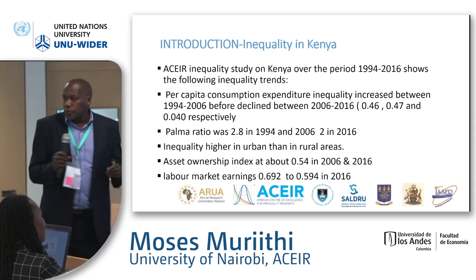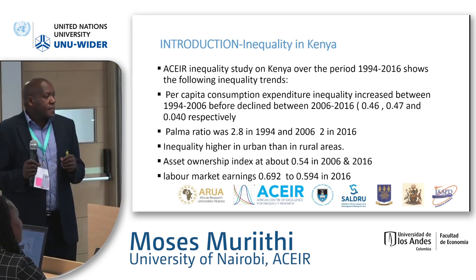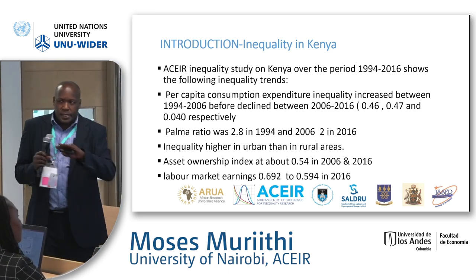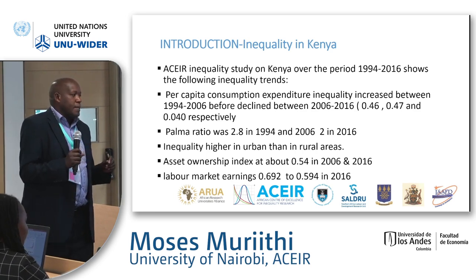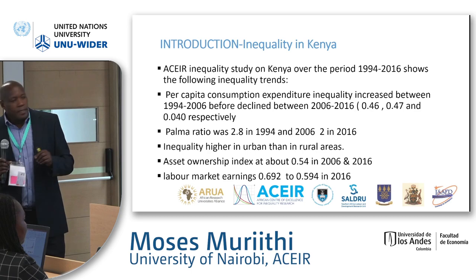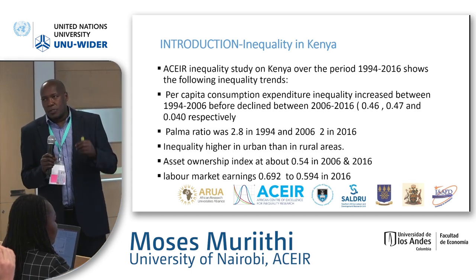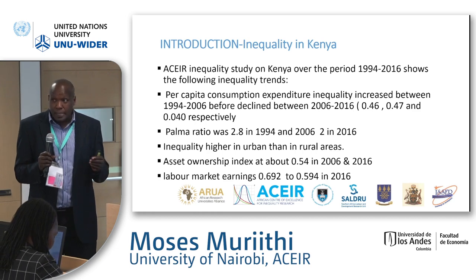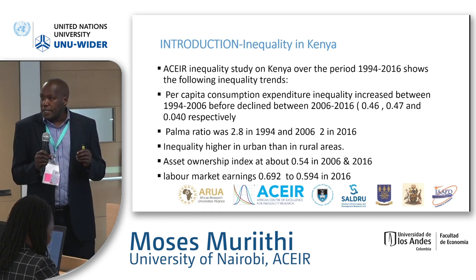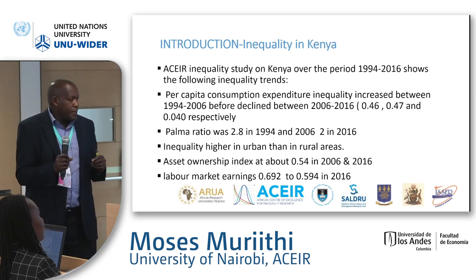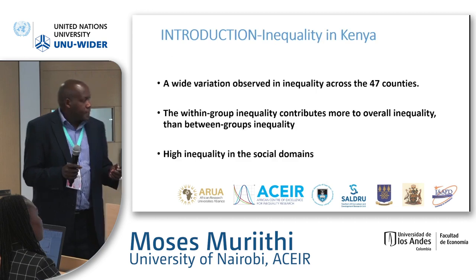We also note that the asset ownership index remained fairly stable at around 0.54 on the Gini scale. Labor market earnings inequality was higher, at almost 0.7 in 1984, but it went down to around 0.59 by 2016.